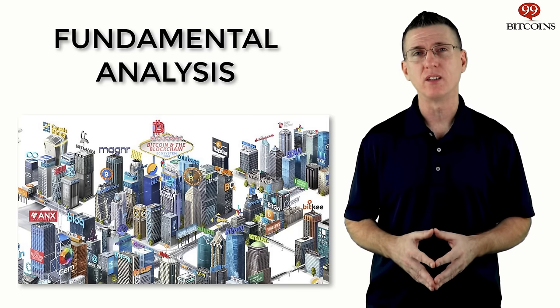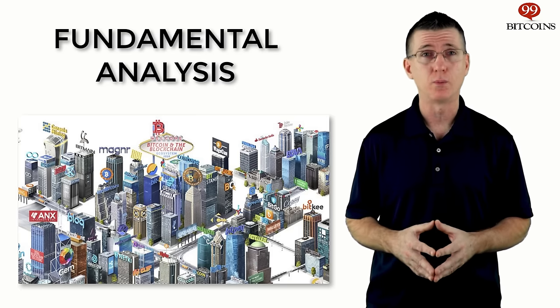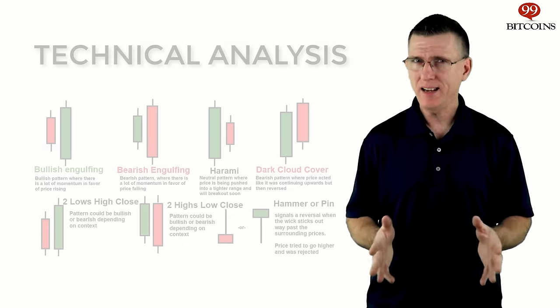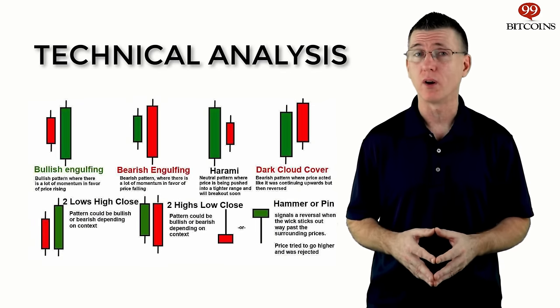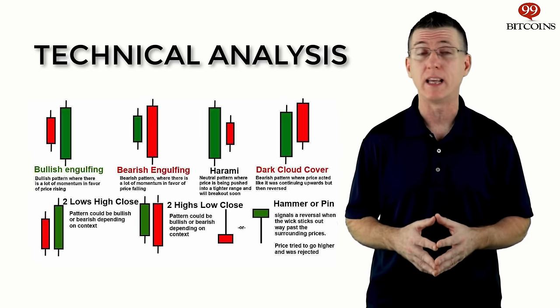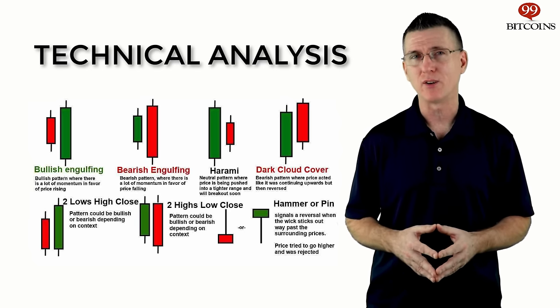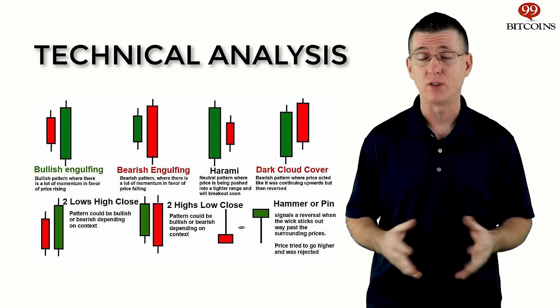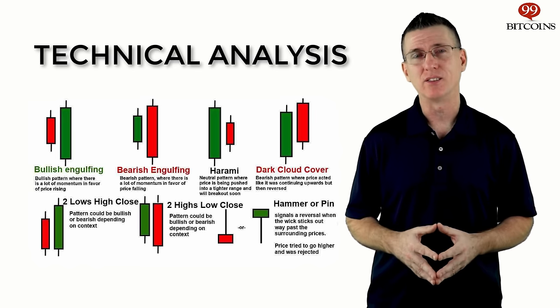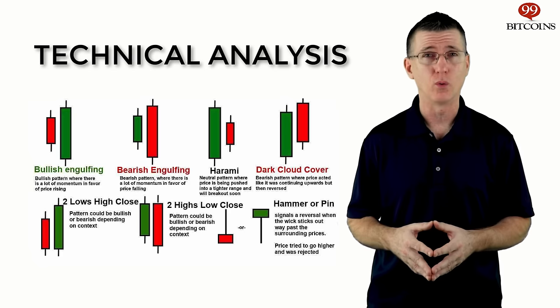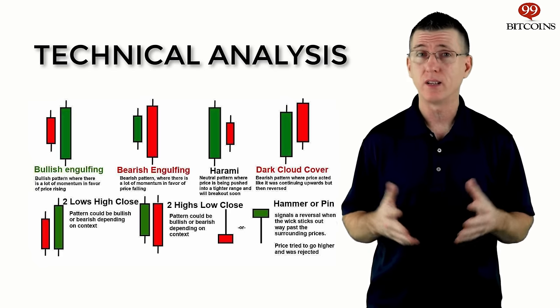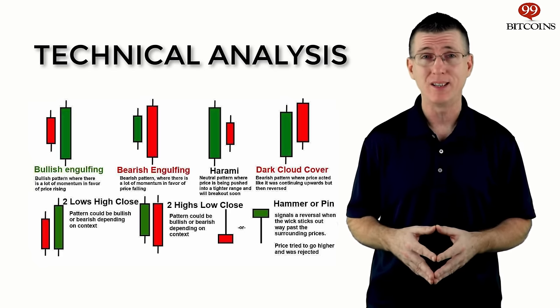For example, if China suddenly decides to ban Bitcoin, this analysis will predict when the price will probably drop. Technical analysis tries to predict the price by studying market statistics such as past price movement and trading volumes. It tries to identify patterns and trends in the price which may suggest what will happen in the future. Technical analysis assumes that regardless of what's currently happening in the world, price movements speak for themselves and tell a story that helps you predict what will happen next. No one can accurately predict the future, but a healthy mix of both methodologies will probably yield the best results.